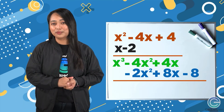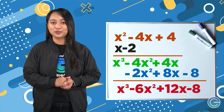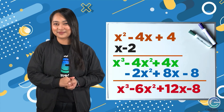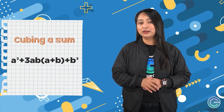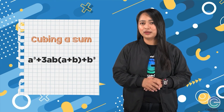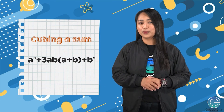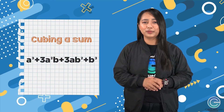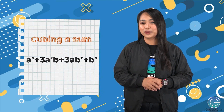Negative 2 times negative 4x is positive 8x, and negative 2 times 4 is negative 8. Combining similar terms gives us x cubed minus 6x squared plus 12x minus 8. But we also have another method that you might find easier to use. When cubing a sum, the formula is: a cubed plus 3ab times the quantity a plus b plus b cubed, or equivalently, a cubed plus 3a squared b plus 3ab squared plus b cubed.